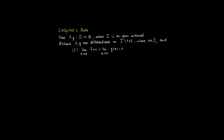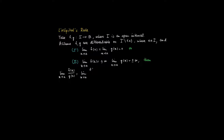The second case is where the limit as x goes to A of f and the limit as x goes to A of g are both plus or minus infinity. Then what L'Hôpital's rule says is that we may calculate the limit as x goes to A of the fraction f(x) divided by g(x) — that limit is the same as the limit of the respective derivatives divided by each other, f' divided by g'. This holds if this limit exists or equals plus or minus infinity.